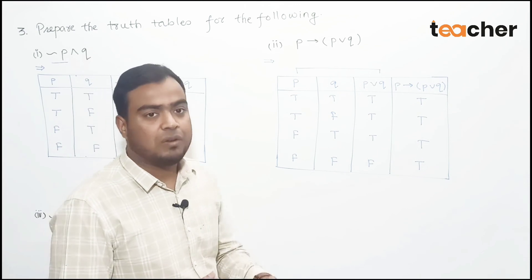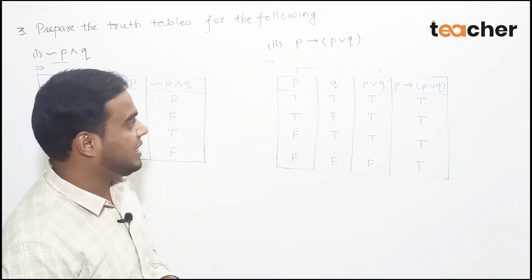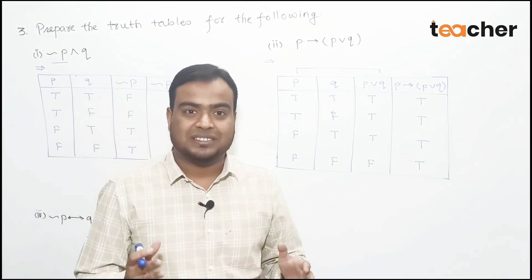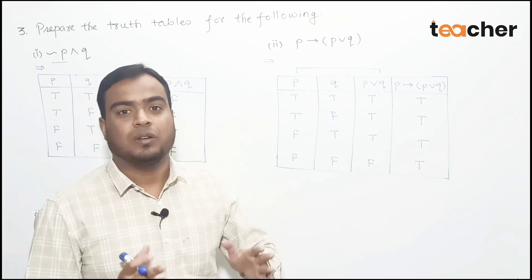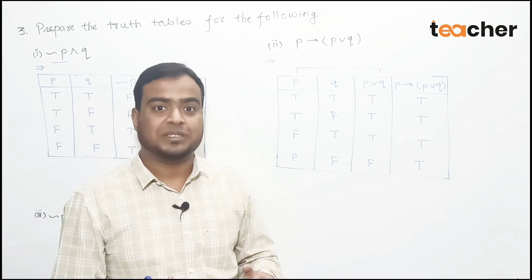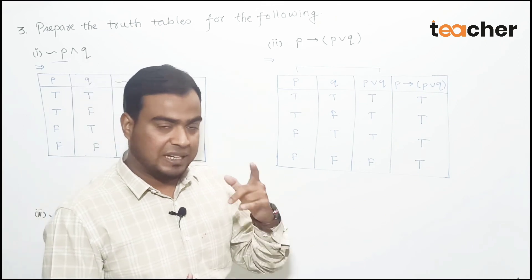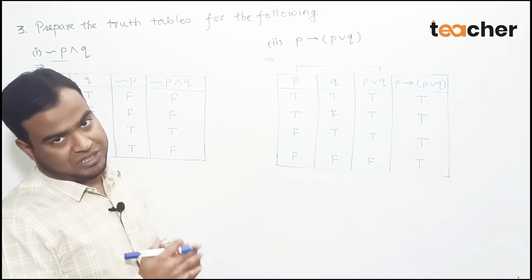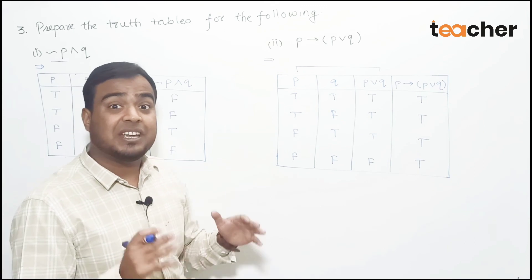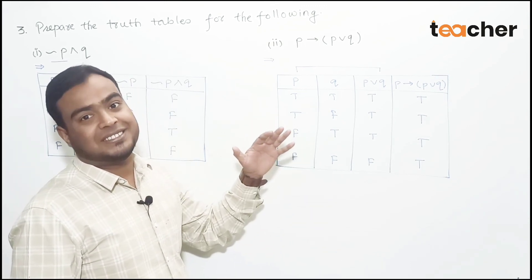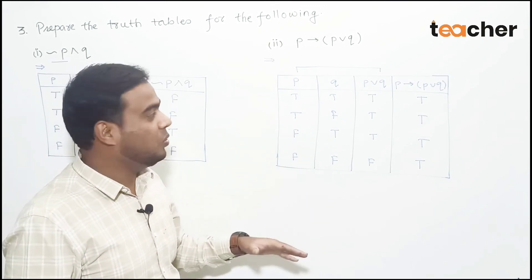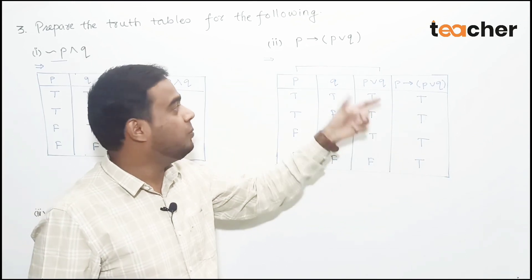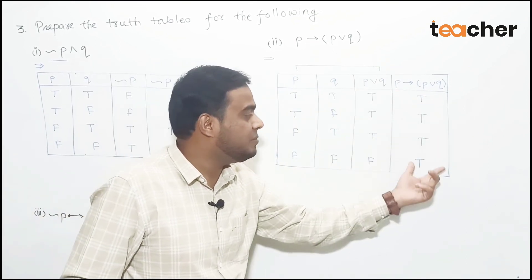There is something interesting here. In logical statements there are three types of statements: tautology — meaning if all the final answers in the truth table are true; contradiction — if all final answers are false; and contingency — if the final answers are a mix of true and false.